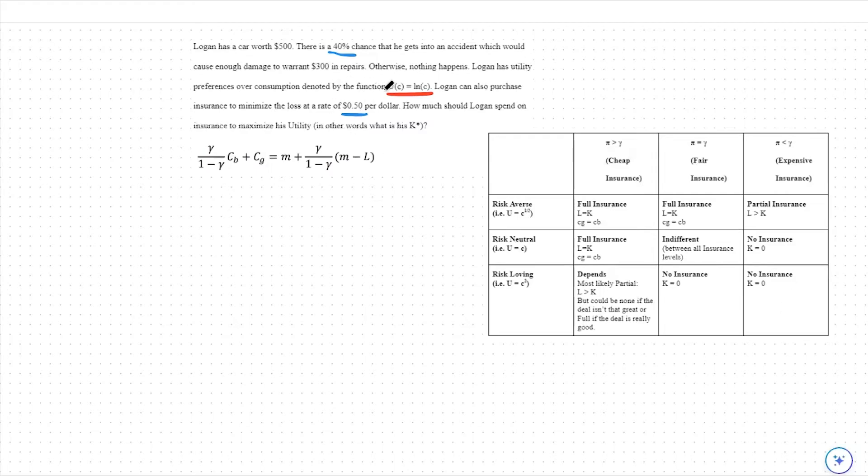As for our risk preferences, the utility function U of C equals LN of C, or the natural log of consumption, is an example of a risk-averse utility function. This means we will be on the top row.